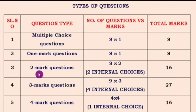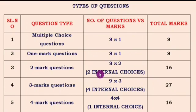The third type is 2-mark questions. There are 8 questions totally, each carrying 2 marks. For 2 of those questions there is an internal choice — not an external choice. External choice means between questions, but here only internal choice is provided for 2 questions. So 8 questions multiplied by 2 gives you 16 marks.